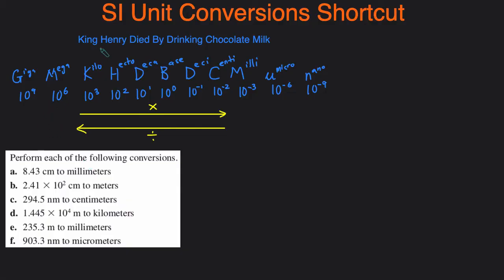The first thing you have to do is either be given your SI prefixes or memorize them. Now if you have to memorize them, you can use this mnemonic to help you out. Maybe you've heard of it before: King Henry died by drinking chocolate milk. Those letters cover a lot of prefixes, so we'll start with K.